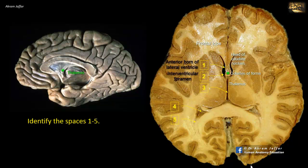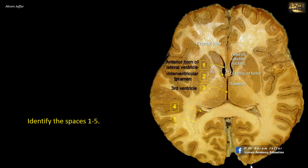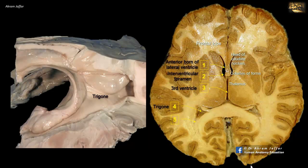The third ventricle here is marked as 3. It is a slit-like space located in the midline. The third ventricle is bounded on either side by the thalami. The wide space 4 is the trigon of the lateral ventricle, where the body of the lateral ventricle meets the posterior and inferior horns.